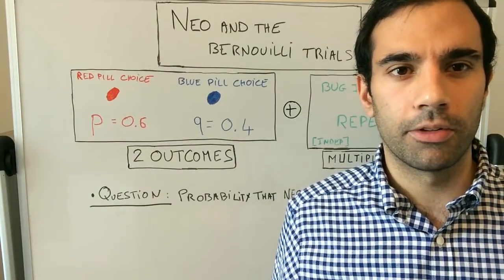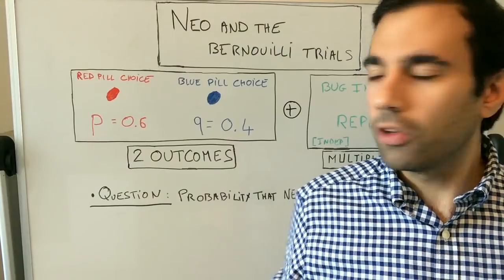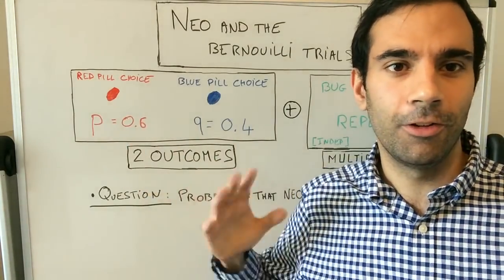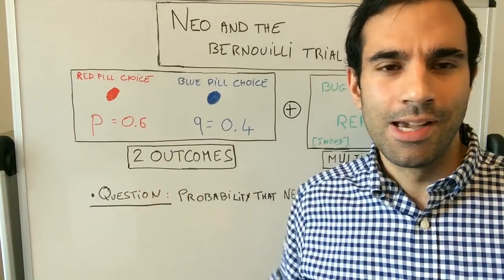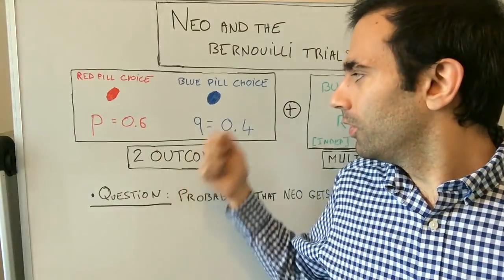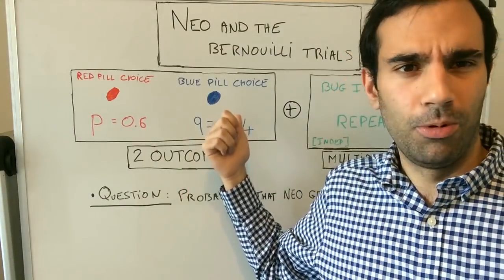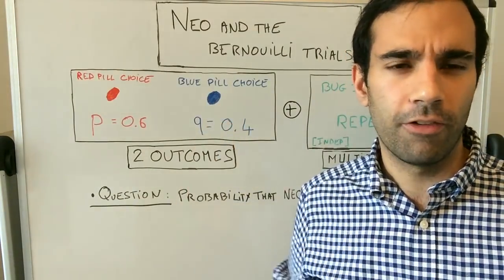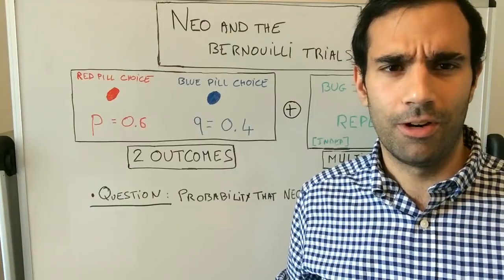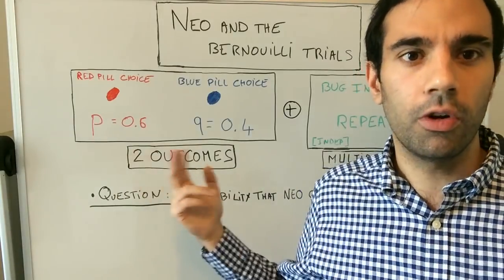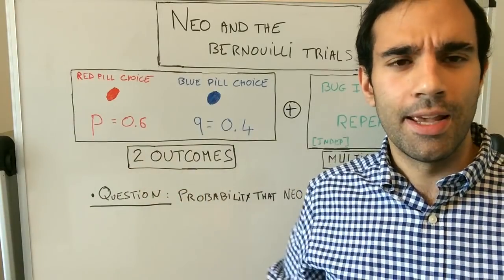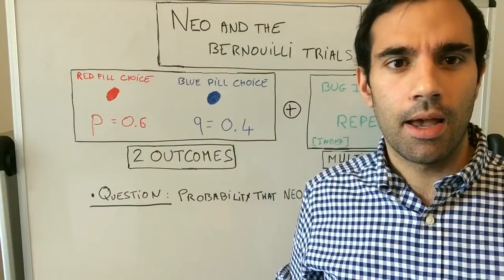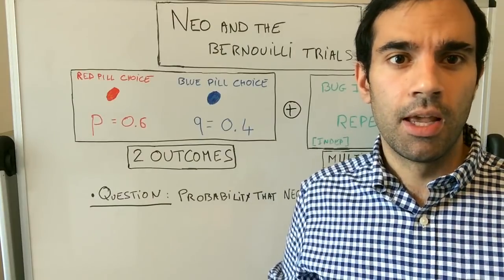Neo is facing a choice with two possible outcomes. Outcome number one is to pick the red pill, basically saving the world. Outcome number two is to pick the blue pill, and if he does so we end up slaves forever — which is not very cool. So two outcomes for Neo.